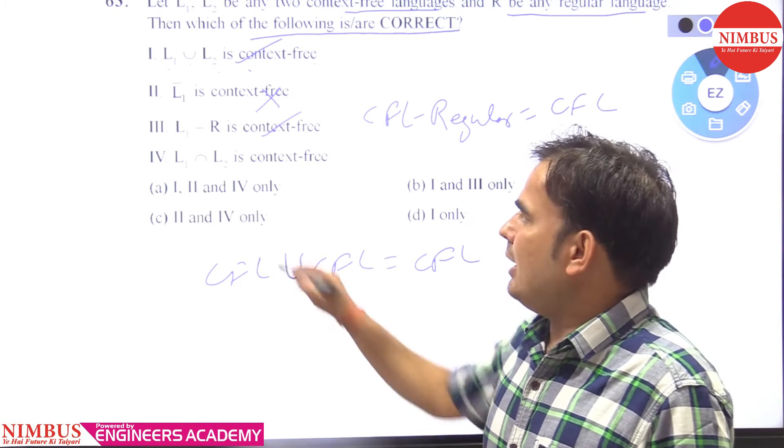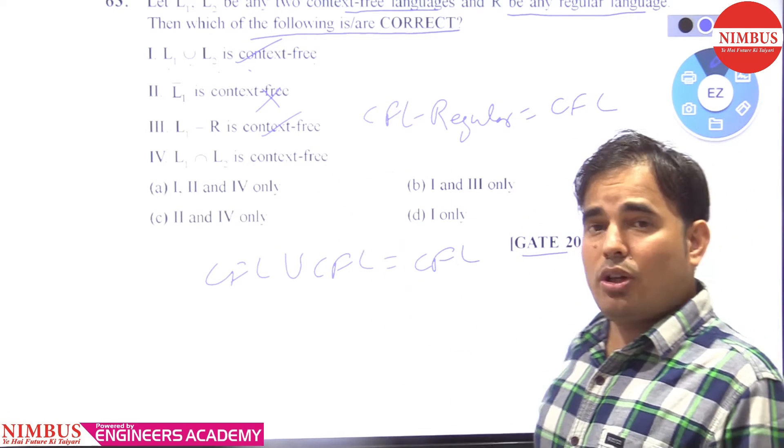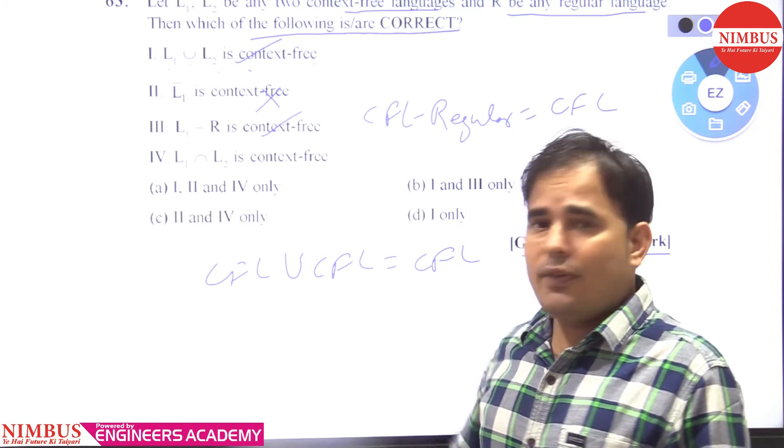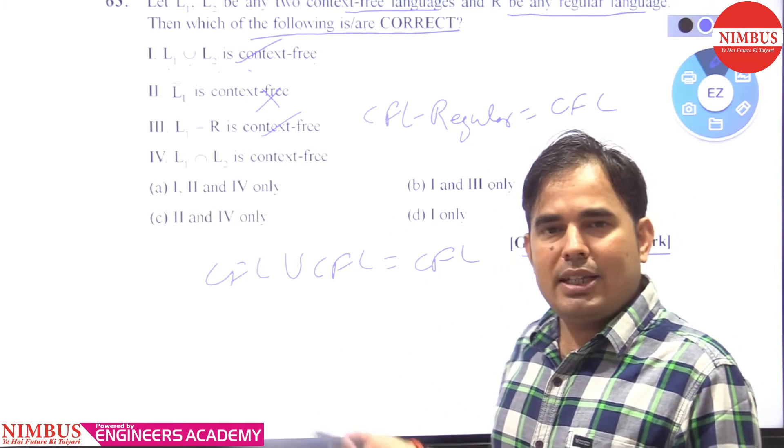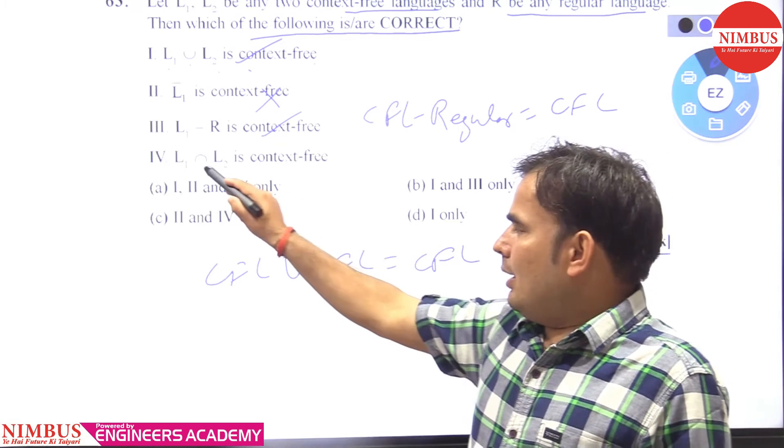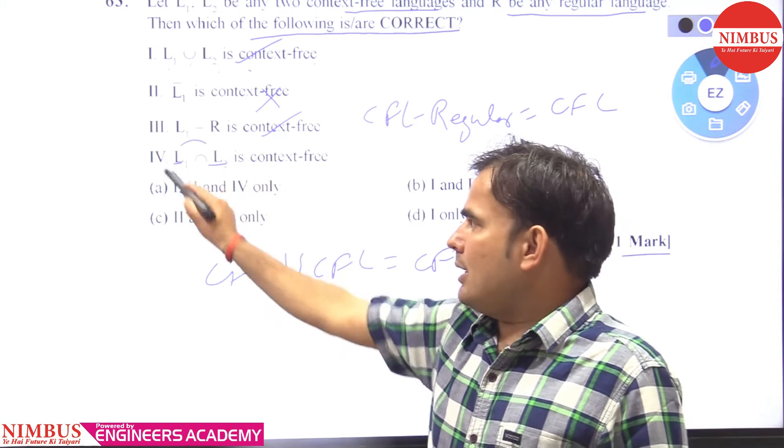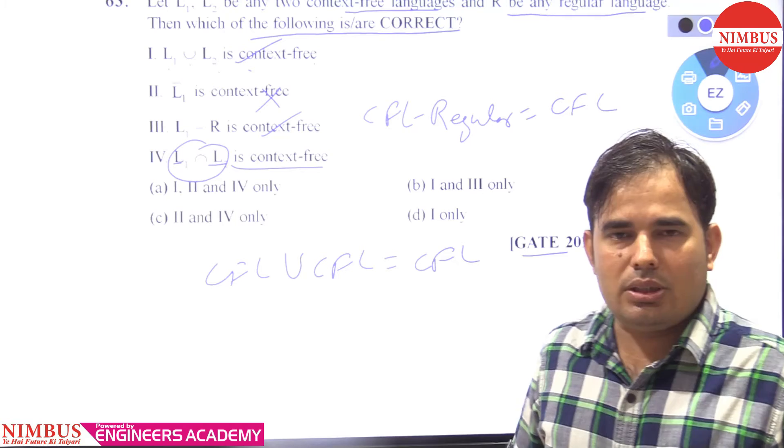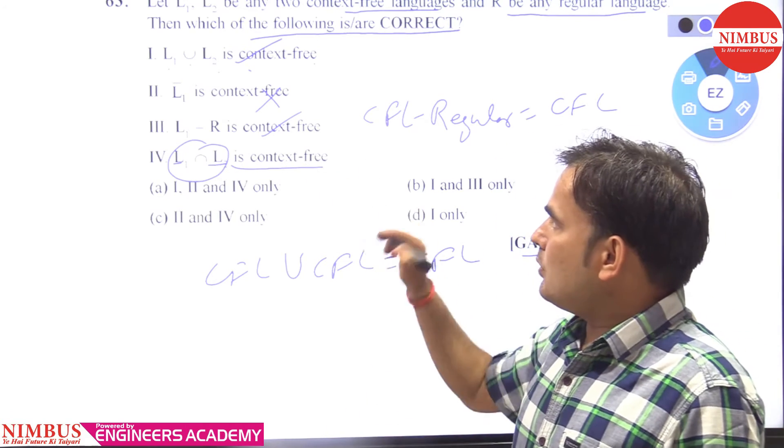Statement fourth is saying L1 intersection L2 is context free. As we know that CFL are not closed under intersection, complement, and difference. That's why when L1 and L2 both are context free and we are taking intersection, then it is not context free because CFL are not closed under intersection. This statement is false.